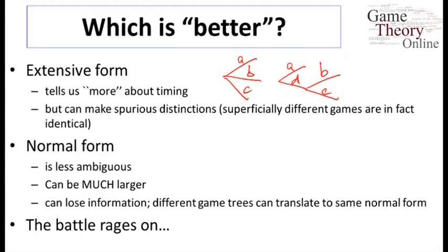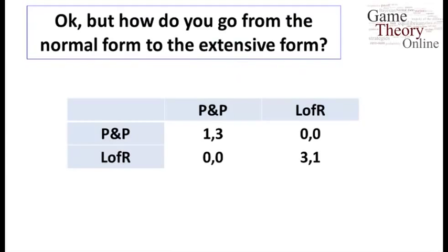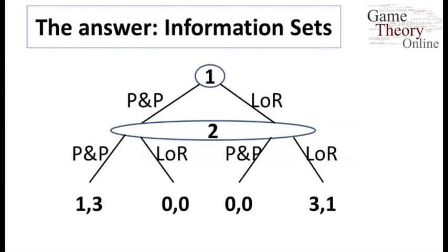But, whereas we could translate from the extensive form to the normal form easily, how can we do the opposite? How can we take the non-sequential battle of the sexes, for example, and turn it into an extensive form game? We capture it with information sets. Whereas before, player two has two nodes and knew in which node it was when it was time to act, here it cannot distinguish the two nodes.